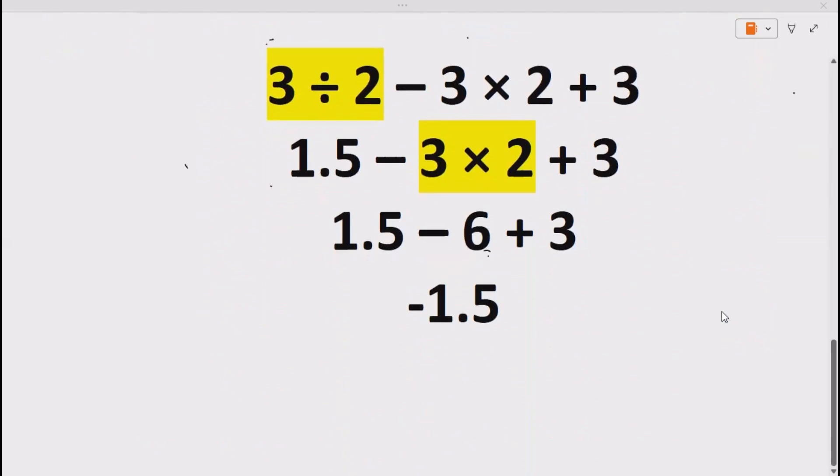So our question is 3 divided by 2 minus 3 times 2 plus 3. We know that 3 divided by 2 gives us 1.5, so we get 1.5 minus 3 times 2 plus 3.